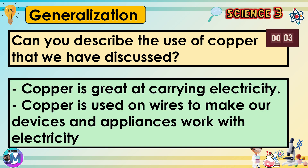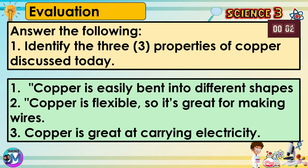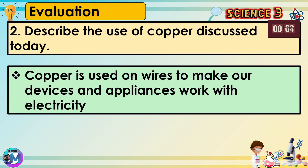Can you describe the use of copper that we have discussed? Copper is great at carrying electricity. Copper is used on wires to make our devices and appliances work with electricity. Identify the three properties of copper discussed today: copper is easily bent into different shapes, copper is flexible so it's great for making wires, and copper is great at carrying electricity.